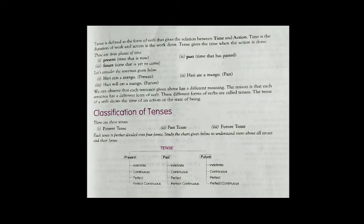Each tense is further divided into four forms. The first one is present tense. It has four sections: indefinite, continuous, perfect, and perfect continuous.